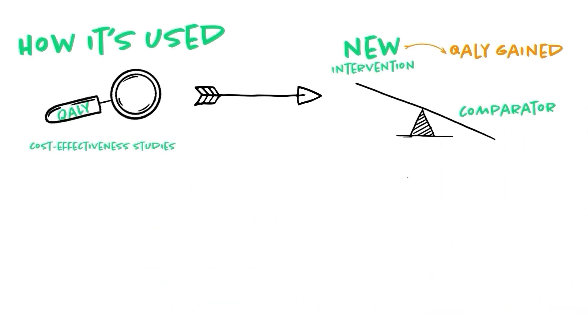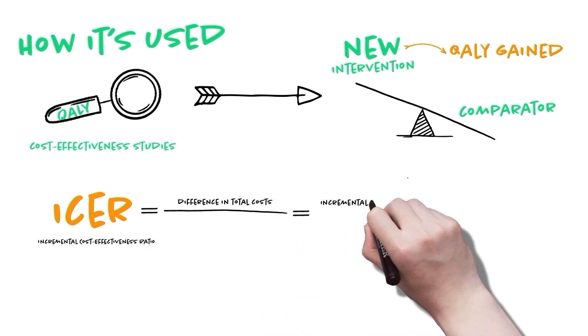I see. And so how do we use it in cost-effectiveness studies? Well, you may know that the key outcome of a cost-effectiveness analysis is the ICER, or the incremental cost-effectiveness ratio, calculated by dividing the difference in total costs, incremental cost, by the difference in the chosen measure of health outcome or effect, incremental effect.